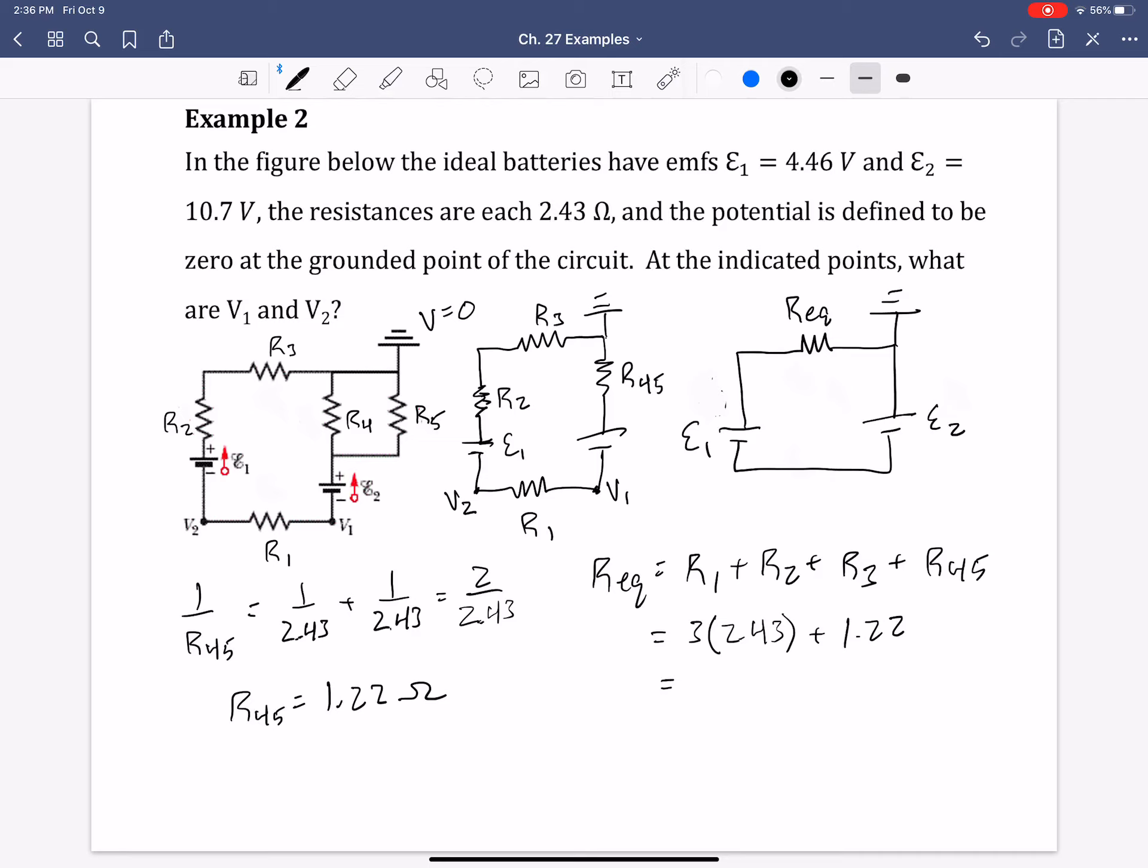R45 is 1.22, like we just found. And so thus the total here is 8.51 ohms. So that's the equivalent resistance in the total circuit. And now all we have are two batteries and one equivalent resistance, thus we can easily find the total current in the circuit.